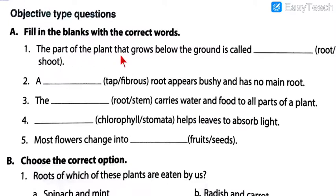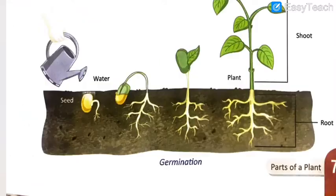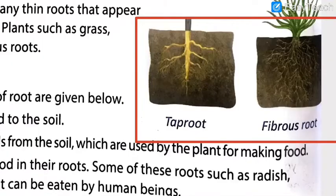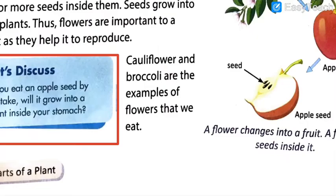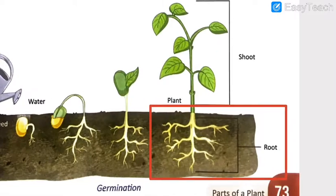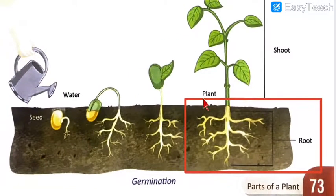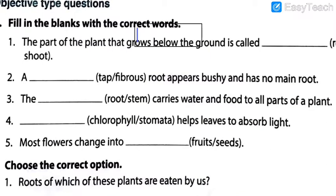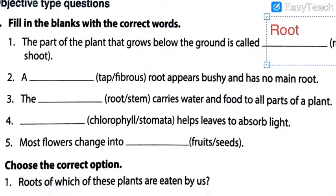Question 1: The part of the plant that grows below the ground is called — root or shoot? The part of the plant which grows below the ground — as you can see in the diagram, this is the part of the plant which grows below the ground level. It is clearly labeled here: root. So the part of the plant that grows below the ground is called root.